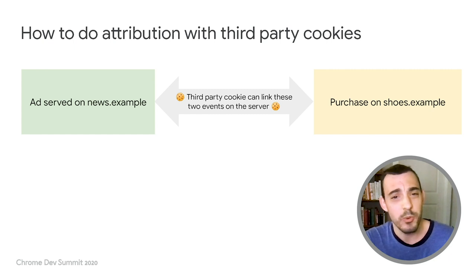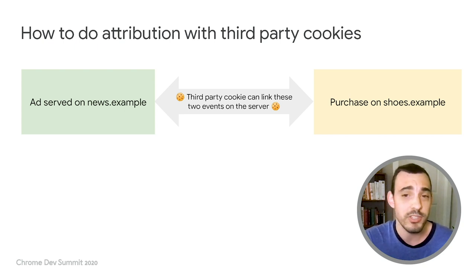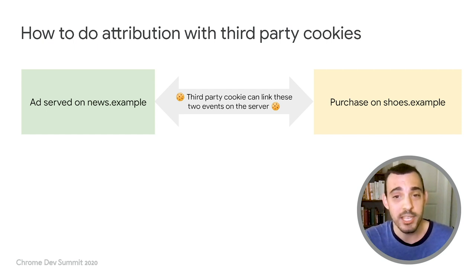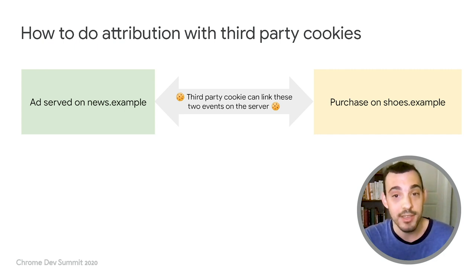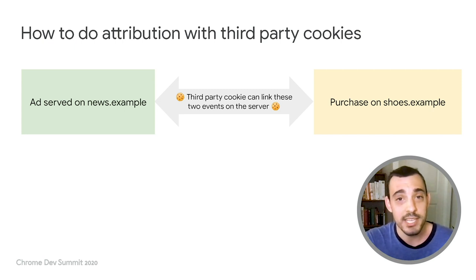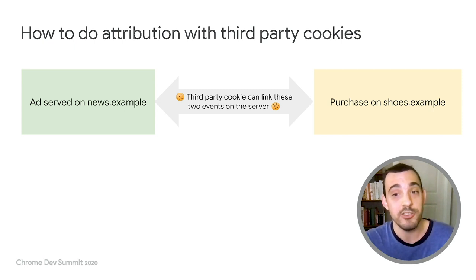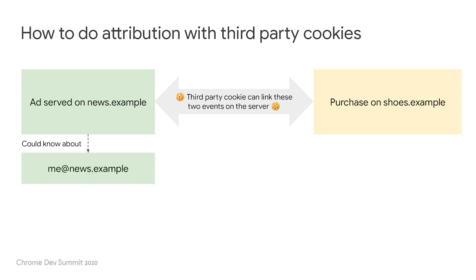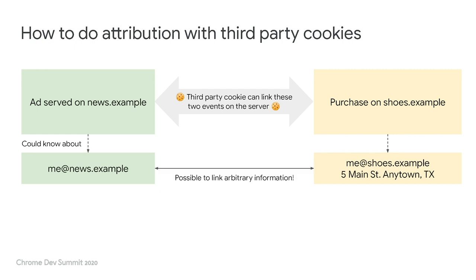As Maude discussed in her talk, we're working to improve the status quo here. The information cookies provide is so powerful that it can be used to track a person as they browse across many websites. In the example here, the ad tech platform that uses the cookie learns detailed information about both the ad event and the conversion event joined together — that's the kind of data that could be used to build a profile based on a person's browsing history. In particular, we risk linking auxiliary data about each of these events. Let's say on news.example I use one email address to log in, and to purchase shoes I use a different email and also share my shipping address. With the power of a cross-site identifier, it is possible to link up all this information to build a profile of me online.